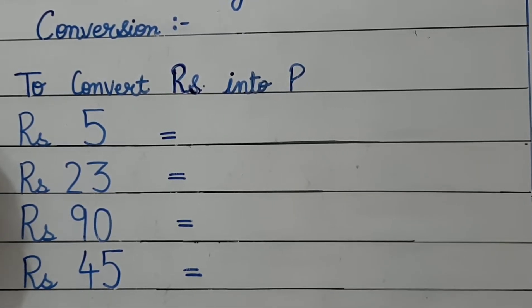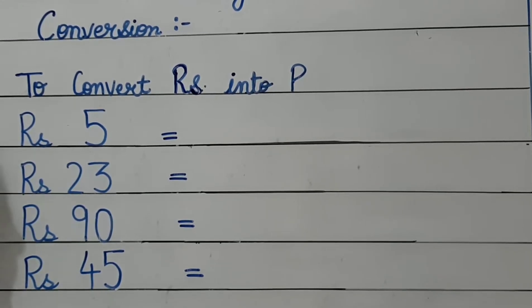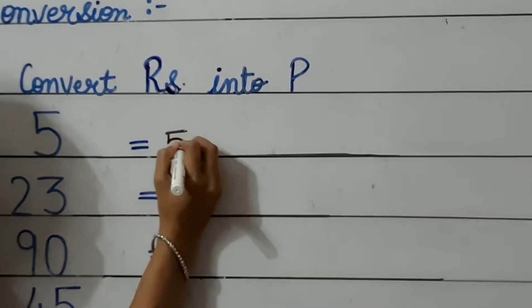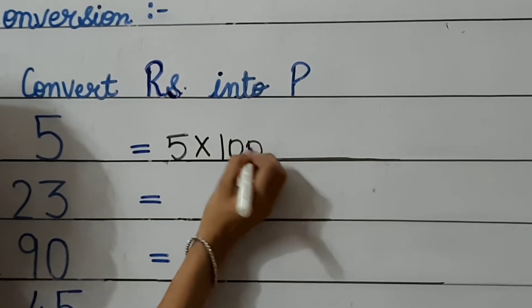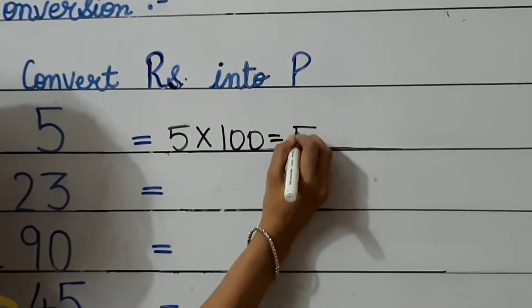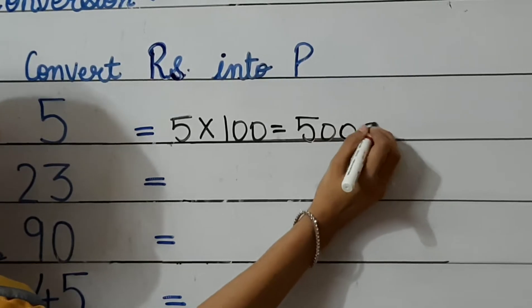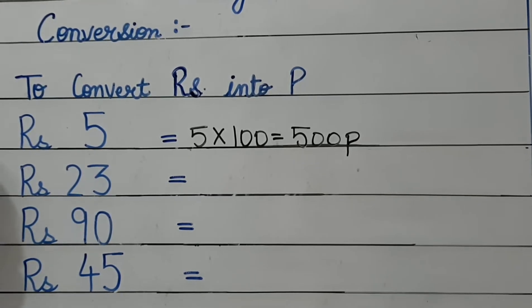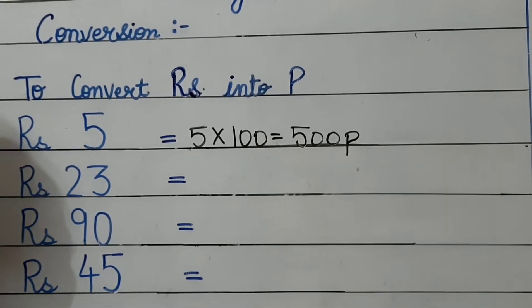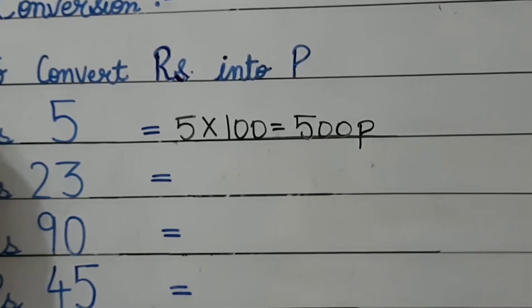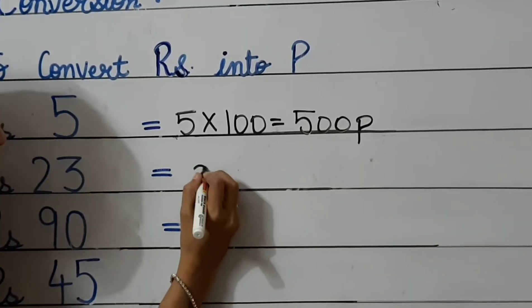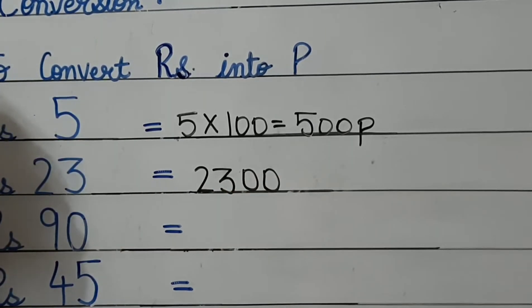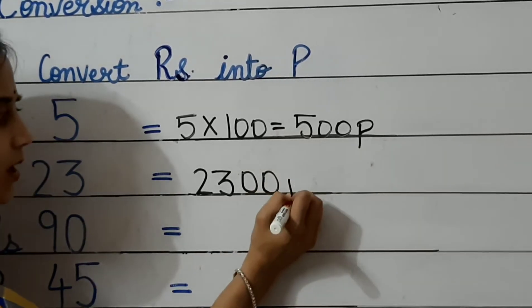Look here children. Number 1: rupees 5. As I told you, you have to multiply it by 100. So 5 multiplied by 100 will be equal to 500 paise — P is denoted for paise. Next, rupees 23. Here also you have to multiply it by 100. When you multiply 23 by 100, you add 2 zeros to it. That will make it 2300 paise.